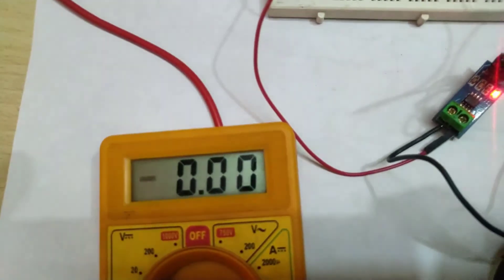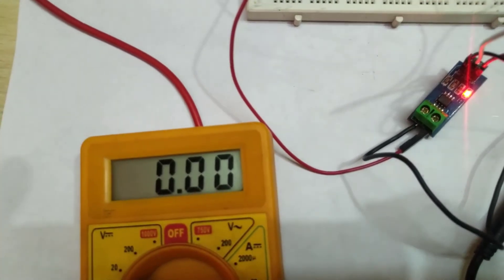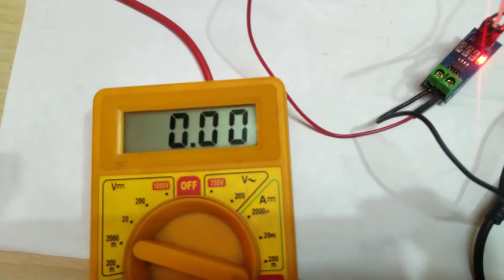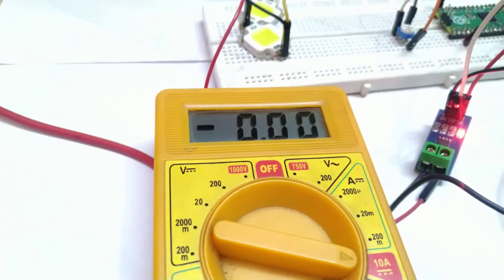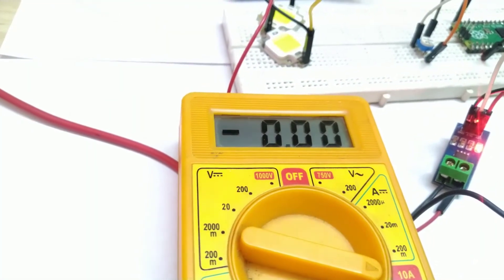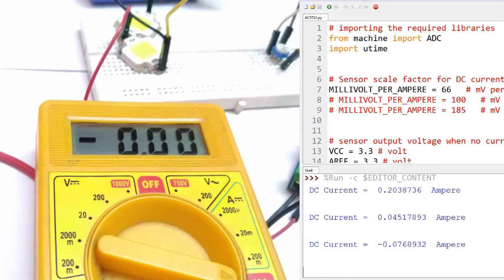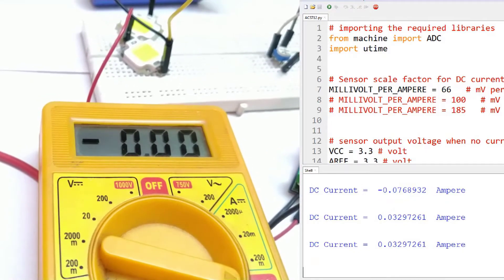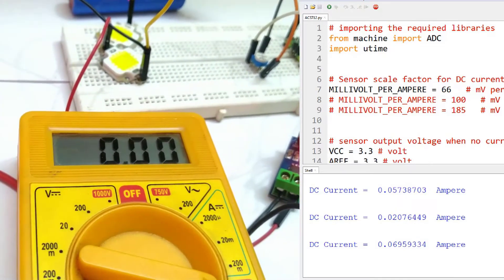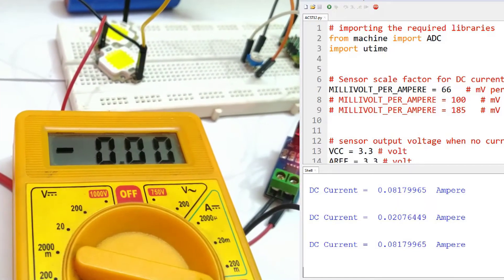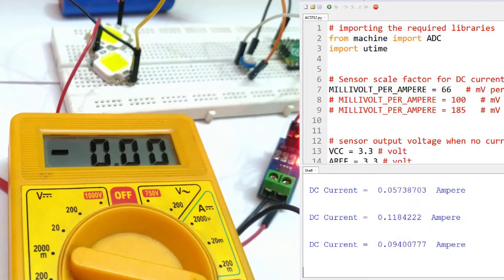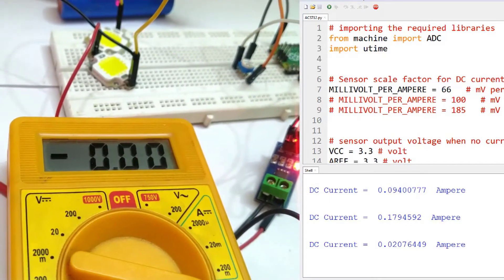So now let me run the MicroPython script and I will show you the readings both in the MicroPython shell and in the multimeter. First let me run the MicroPython script. Initially it is giving us fluctuating readings because of the fluctuating magnetic field in the surrounding and because of any magnetic field that is generating because of these conductors and this can be taken care of by using proper sensor calibration and error handling.